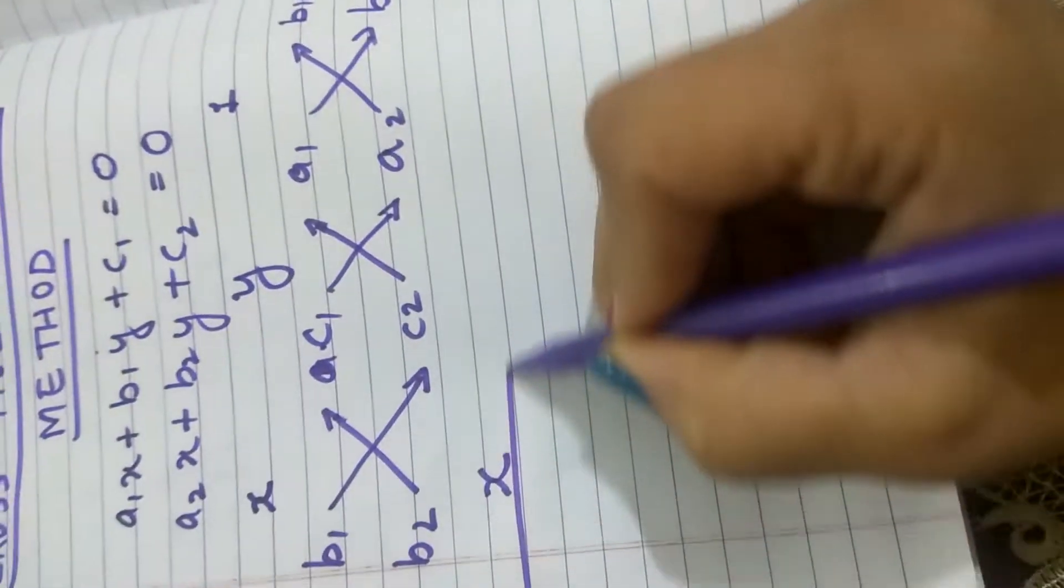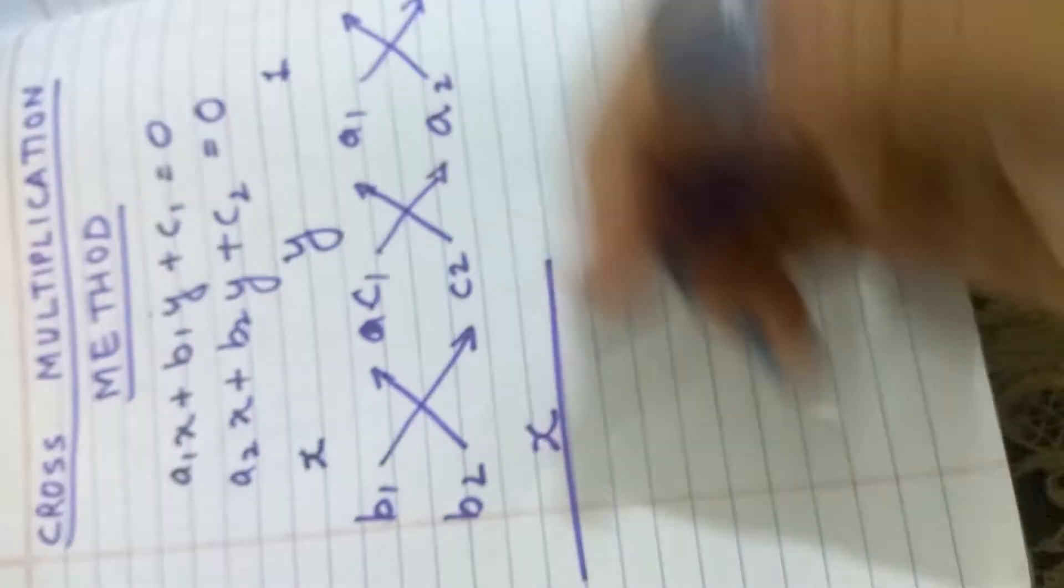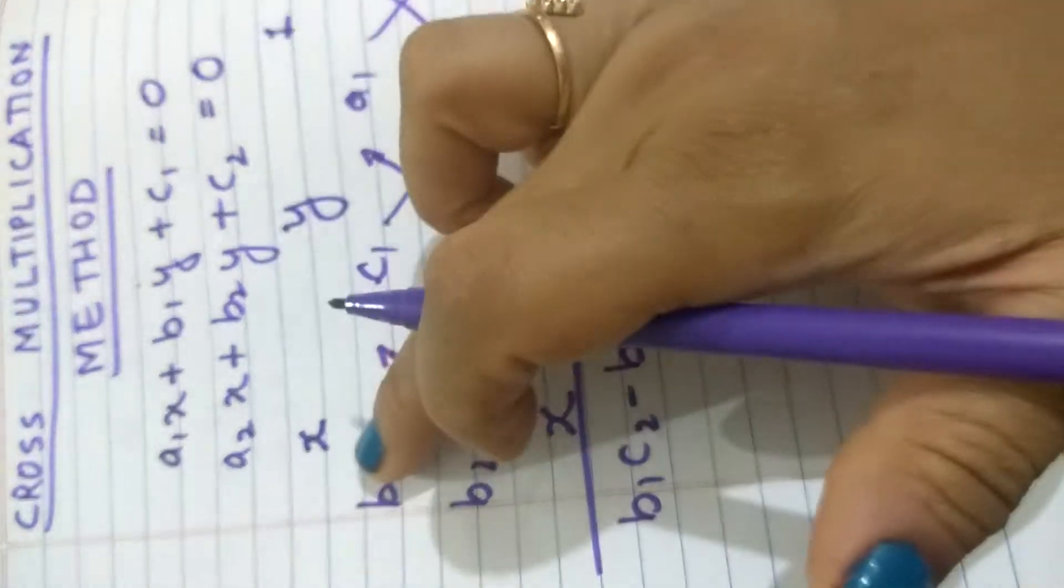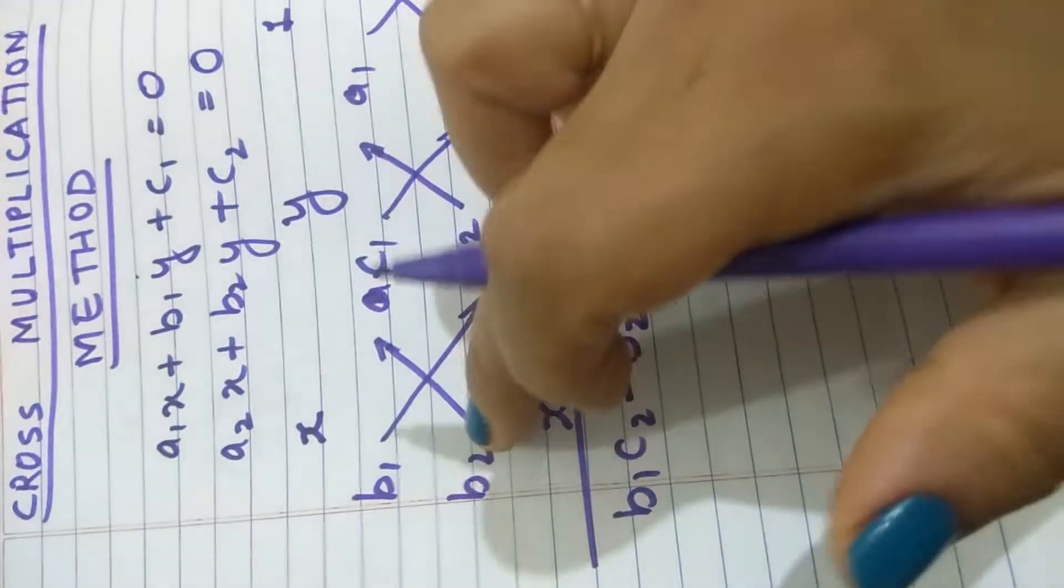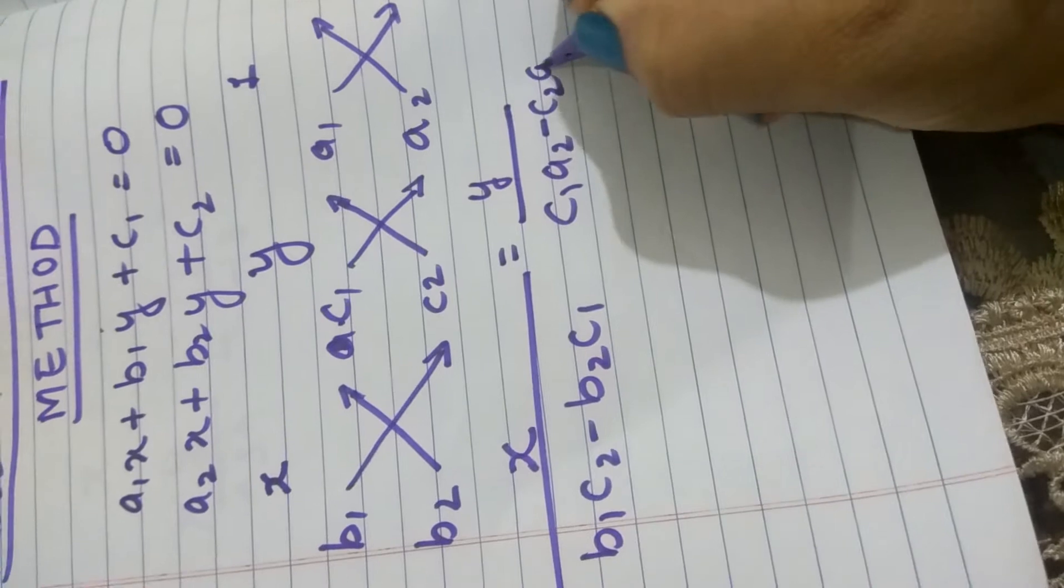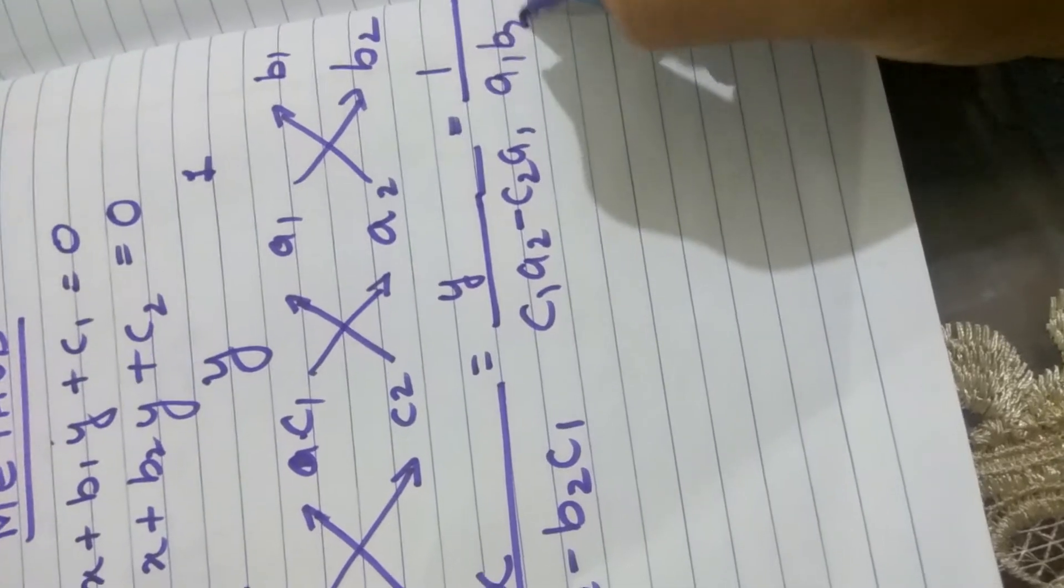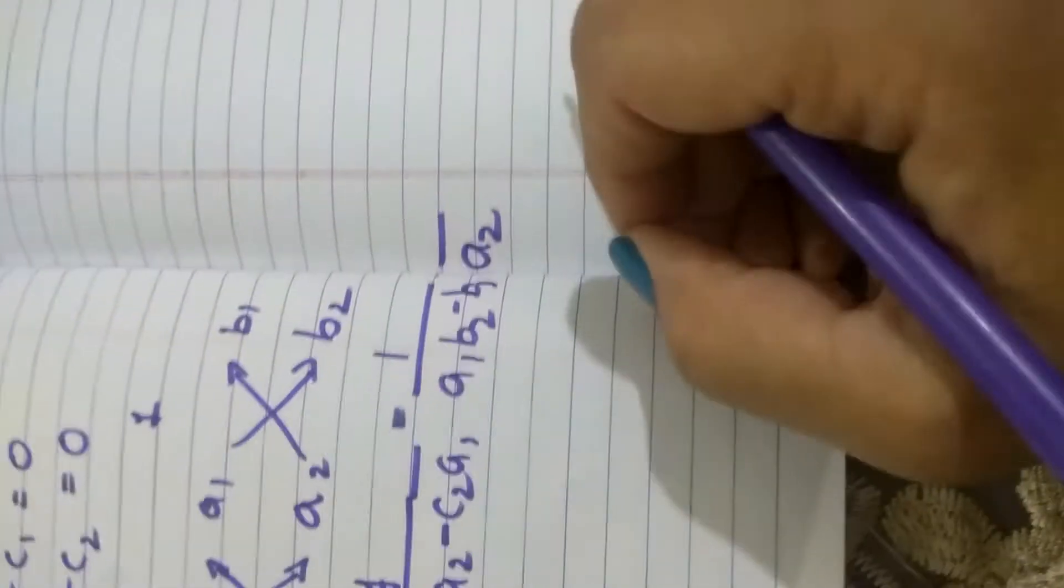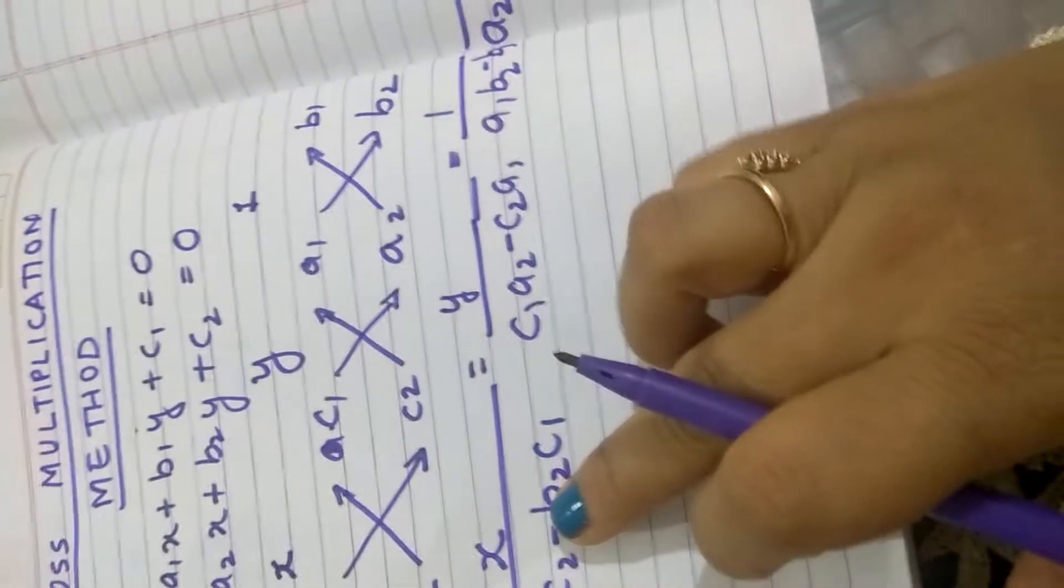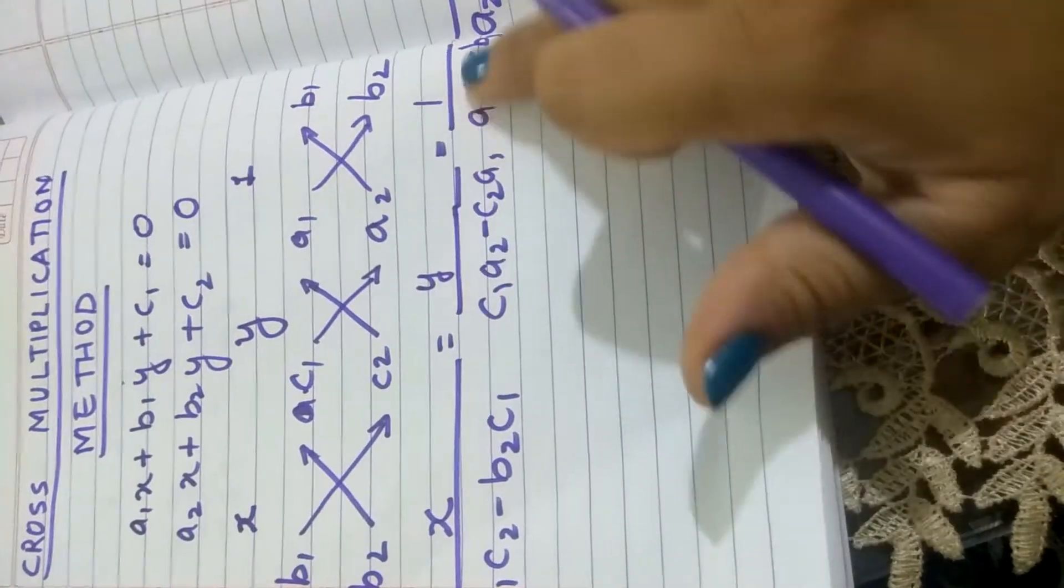After this, I have to take x upon, I have to take product using these arrows: b1, c2 minus b2, c1. This subtraction I am doing, the first arrow I will follow and this will be multiplied with this minus this multiplied with this. Similarly, I will do for y: it will be c1, a2 minus c2, a1, and then equal to 1 upon a1, b2 minus b1, a2. Like this I have to write. And then I can solve this part and this part together because this will have only constants and get the value of x. And to get the value of y, these two will be solved.